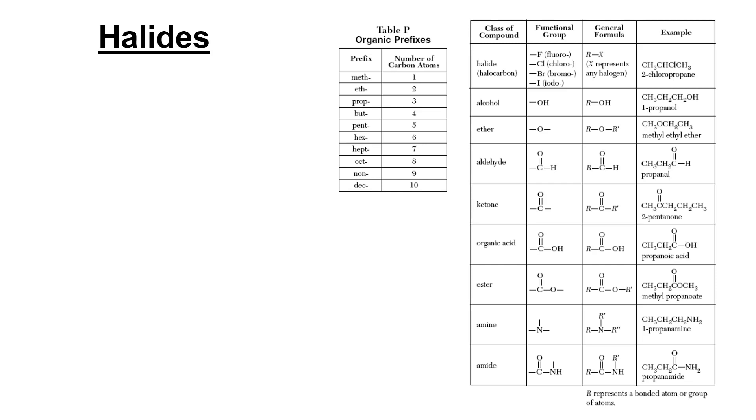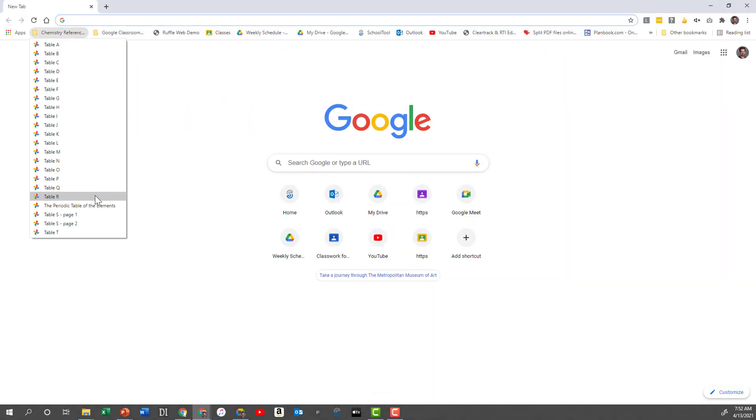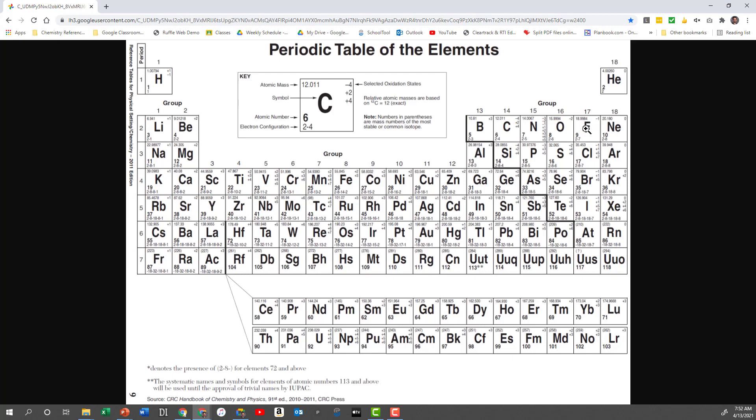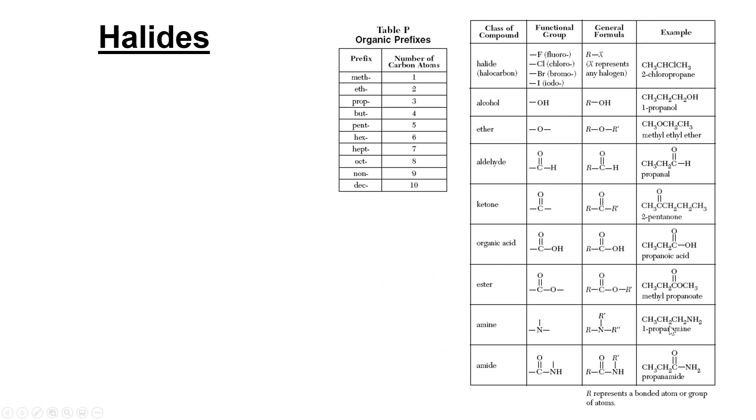So the first one is halides. In the example, they have replaced a hydrogen with a halogen. And what's a halogen? Remember, a halogen is anything that's in group 17. So if you take a group 17 element, fluorine, chlorine, bromine, or iodine, those four, and put it where a hydrogen used to be, then it's called a halide.